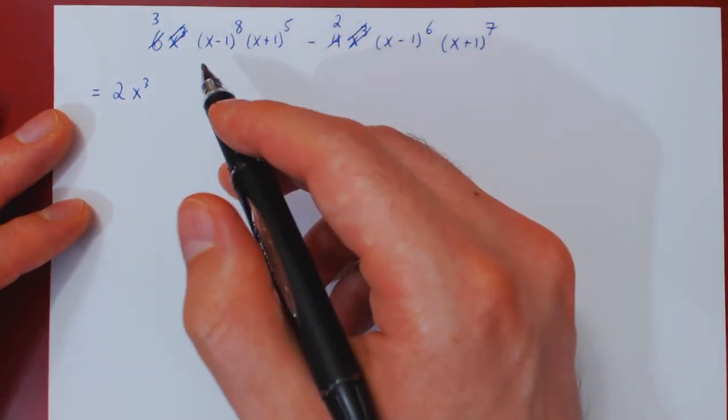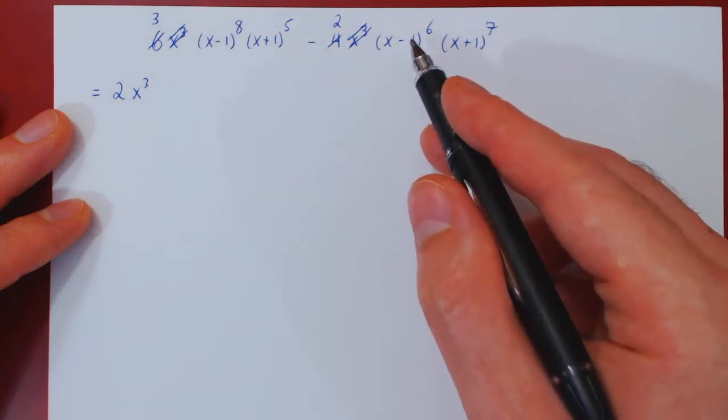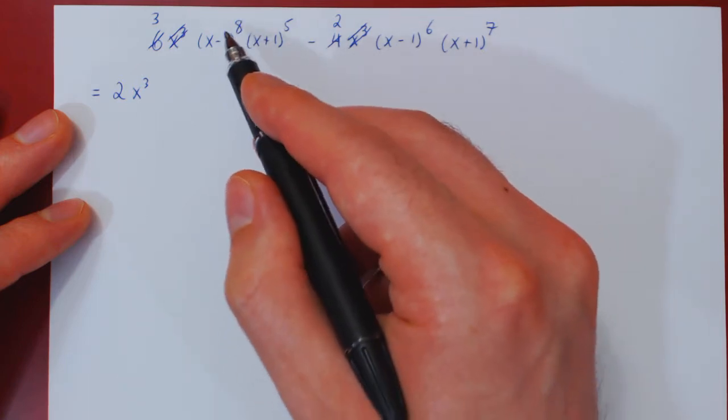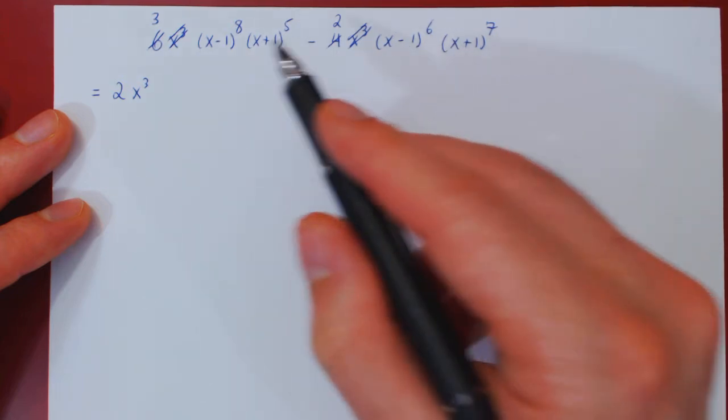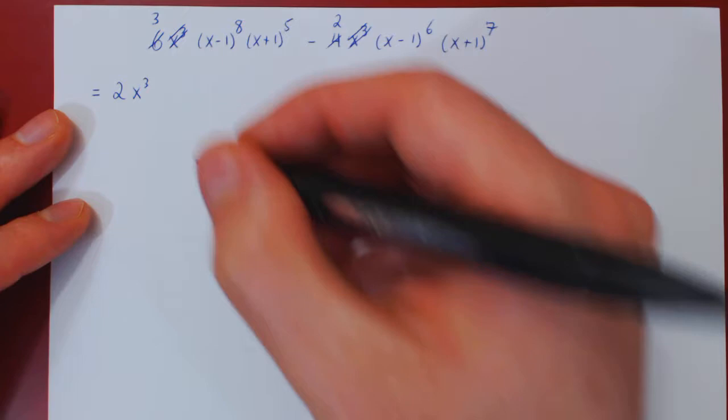Then, well, there's a factor of x minus 1 in the first and second term. There are 8 factors of x minus 1 in the first, but only 6 in the second. So the best we can do is factor 6 times x minus 1, therefore factor x minus 1 to the 6th.